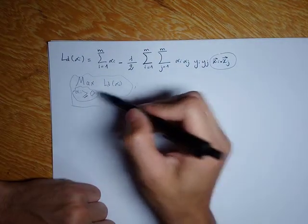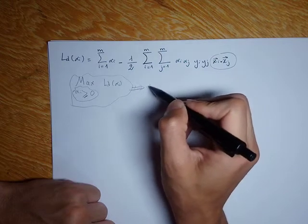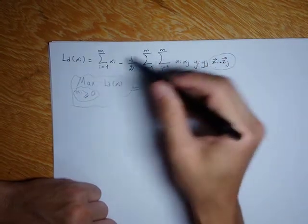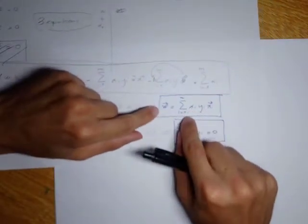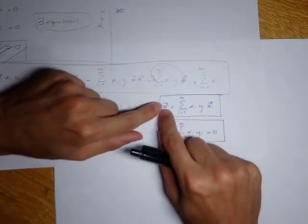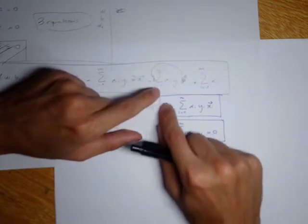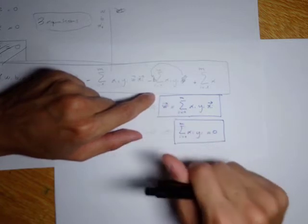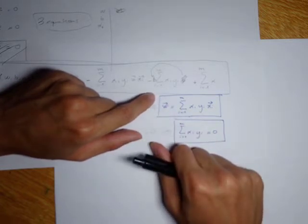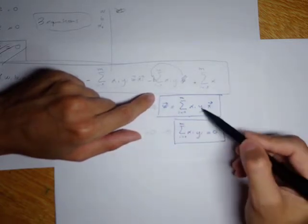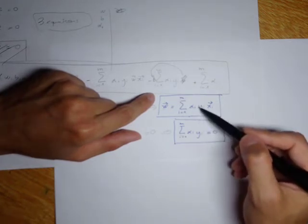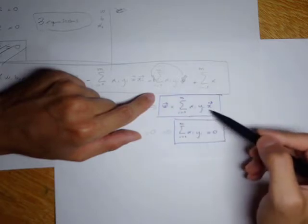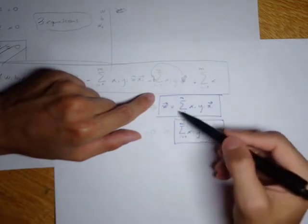When we get the value of alpha_i that maximizes this expression, we replace it in the expression for w to get the value of w — both the magnitude and direction. Here alpha_i, y sub i, and x sub i are all known, and this allows us to compute w.